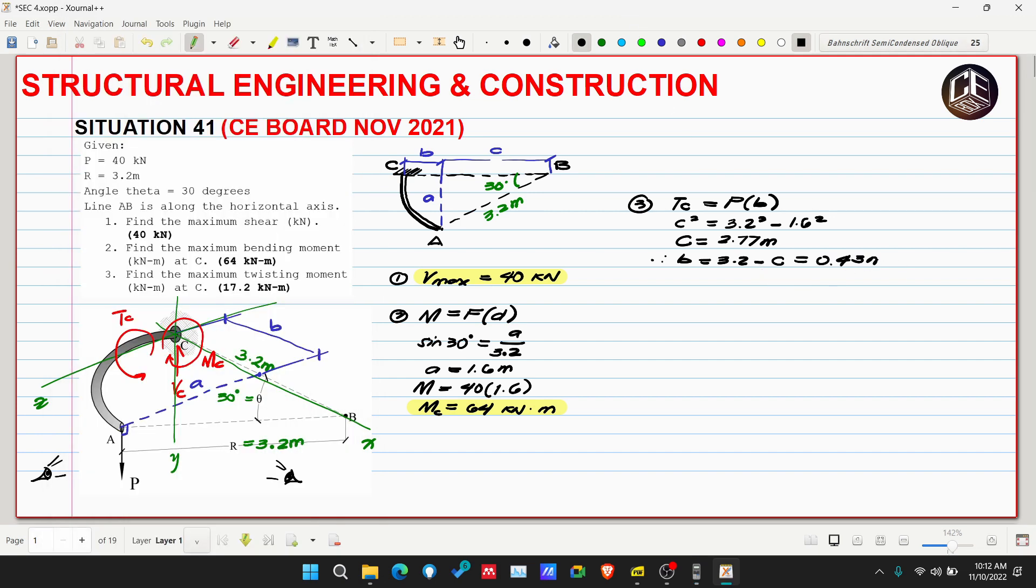So our Tc is equivalent to 40 kilonewtons multiplied by 0.43 meters. So 17.2 kilonewton meters, that's our twisting moment at point C.